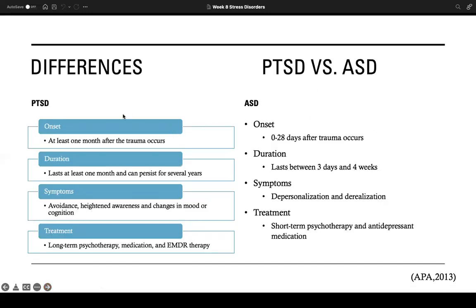Now let's talk about the differences between PTSD and ASD, as they sound very similar and overlap. The onset for PTSD is at least one month after the trauma occurs; for ASD, it's zero to twenty-eight days after. PTSD duration lasts at least one month and can persist for several years; ASD lasts between three days and four weeks. PTSD symptoms include avoidance, heightened awareness, and changes in mood or cognition; ASD features depersonalization and derealization. PTSD treatment involves long-term psychotherapy, medication, and EMDR therapy; ASD treatment involves short-term psychotherapy and antidepressant medication.